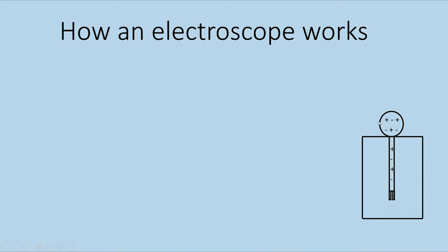According to the rule of transfer of electrons for conductors, electrons go from the object that carries more electrons to the object that carries less. Between the negative object and the neutral electroscope, the negatively charged object has more electrons. So once placed in contact with the knob, electrons transfer from the negatively charged object to the knob, making the knob, rod, and leaflets all negatively charged — so they repel each other.